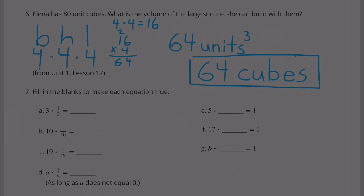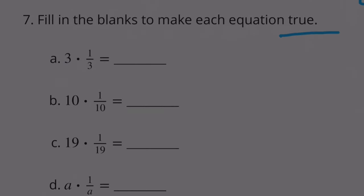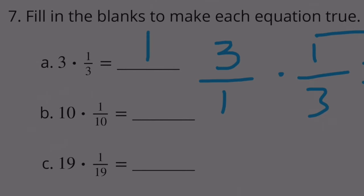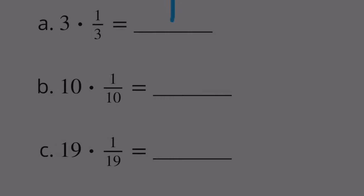Number seven: Fill in the blanks to make each equation true. Three times one third equals three over three. Three over three really means three divided by three, and three divided by three is one. Three times one third is really the same thing as ten times one tenth. So what is 10 divided by 10? It's one.